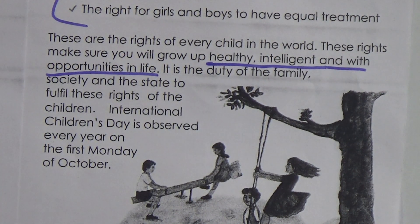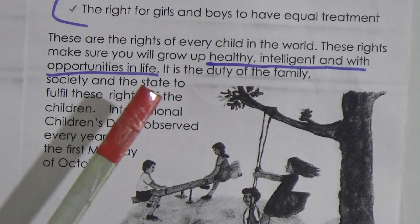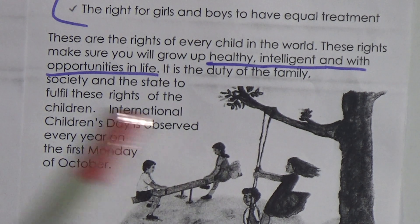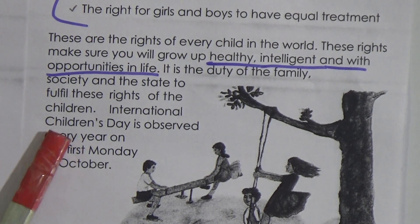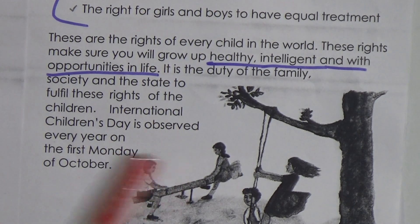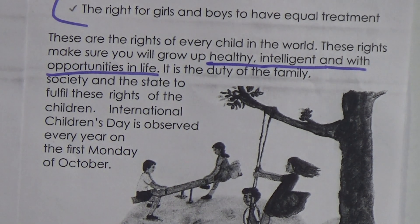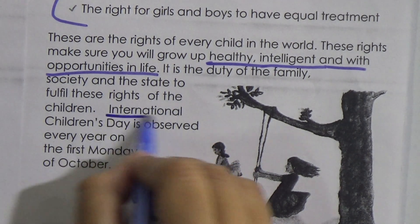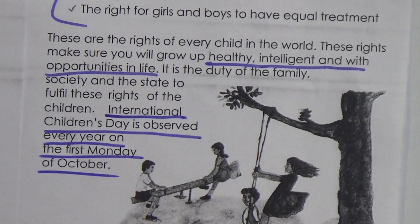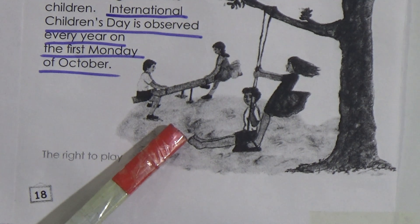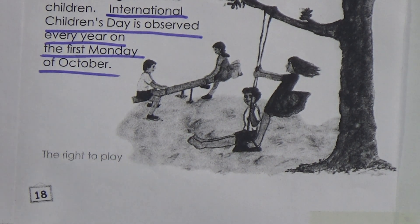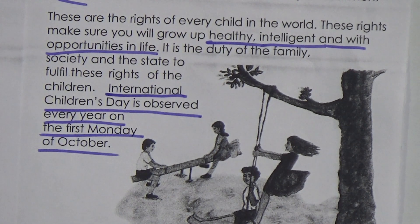We need these rights to grow up healthy, intelligent, and with opportunities in life. It is the duty of the family, society, and the state to fulfill these rights of the children. International Children's Day is observed every year on the first Monday of October. Look at the picture — the right to play. You have the right to play, but you will not play the whole day; you will be given time to play, take rest, study, and do other work.